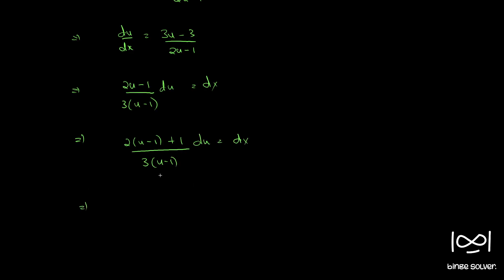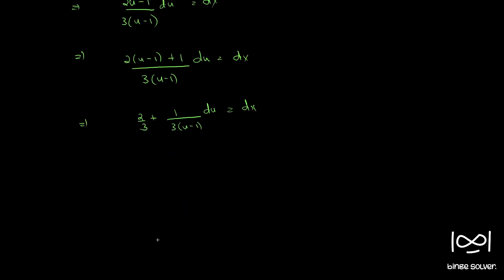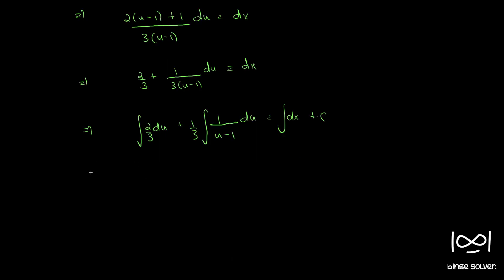If we open up, we get [2/3 + 1/(3(u-1))] du = dx. Integrating both sides, this gives (2/3)u + (1/3)log|u - 1| = x + c, since the integral of 1/(u-1) is log|u-1|.